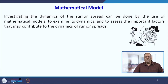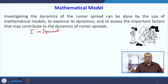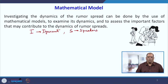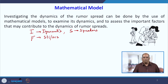To start with, let us divide the individuals into three categories. The first is 'Ignorant' — those who do not know about the rumour. Then come the 'Spreaders' — those who spread the rumour. And the third category is 'Stiflers' — those who already know the rumour but have lost interest in spreading it. With these three categories, we now form our differential equations.